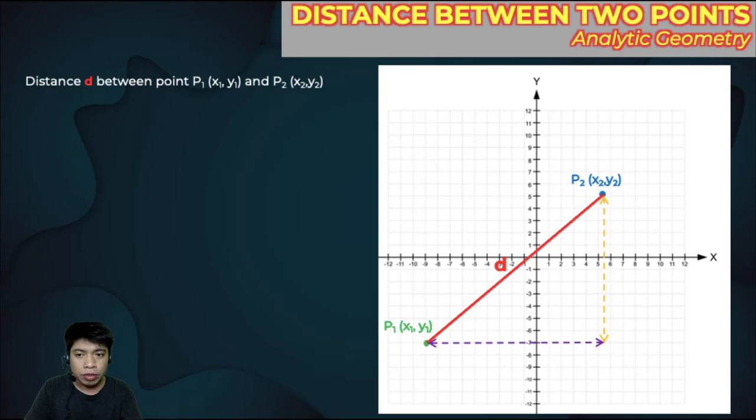We are going to use the Pythagorean theorem for computing the distance. For the vertical distance, we compute y2 minus y1, and the horizontal distance is x2 minus x1. It's okay if this distance becomes negative, because when we use the Pythagorean theorem, it will become positive anyway since we square the vertical and horizontal distances.